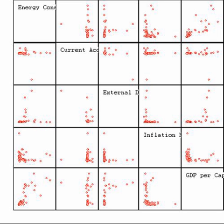Some definitions: Merriam-Webster Dictionary defines statistics as a branch of mathematics dealing with the collection, analysis, interpretation, and presentation of masses of numerical data. Statistician Arthur Leone Boli defines statistics as a mathematical body of science that pertains to the collection, analysis, interpretation or explanation, and presentation of data, or as a branch of mathematics.